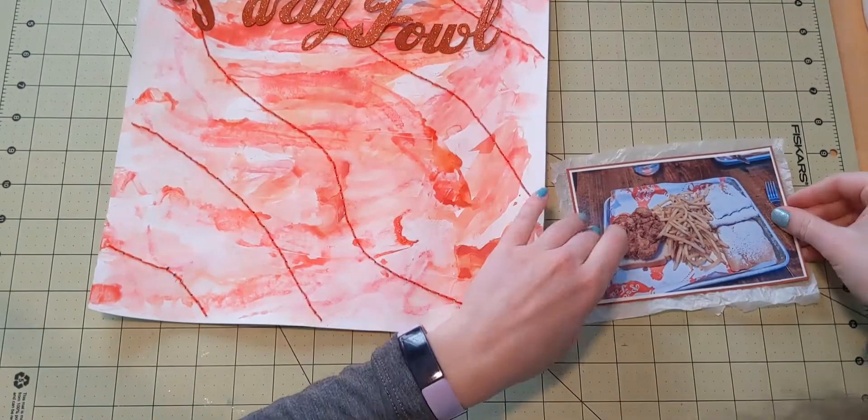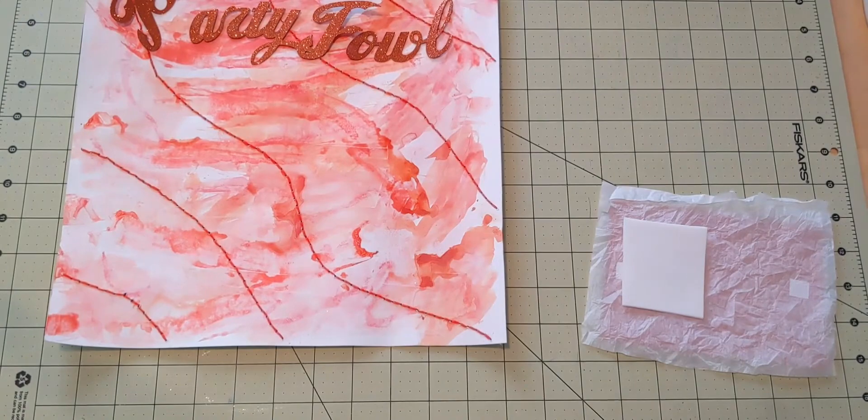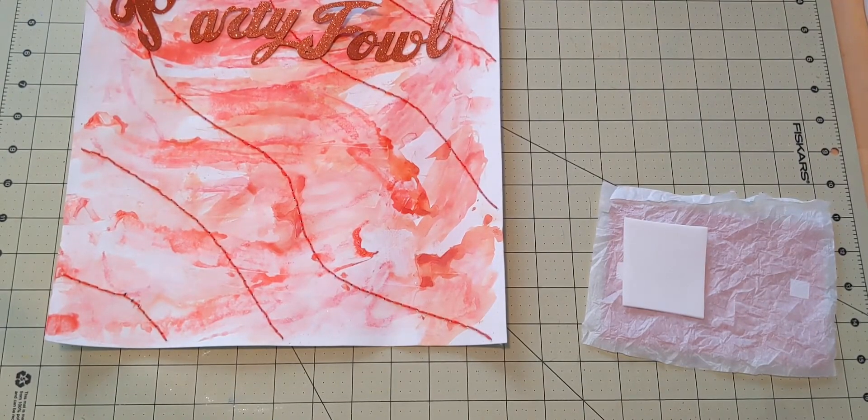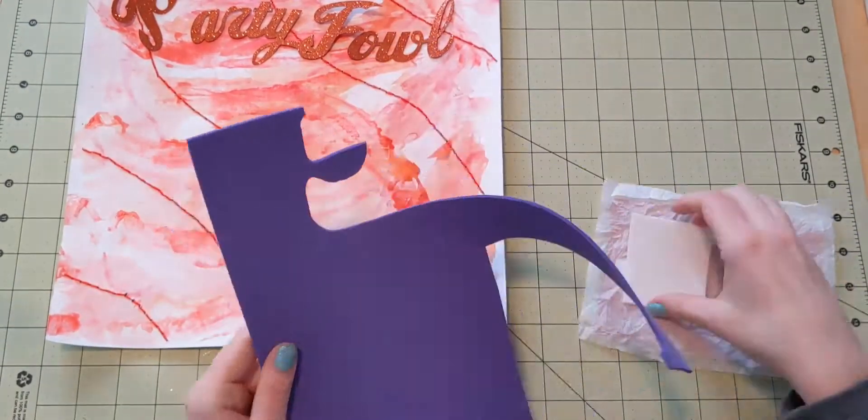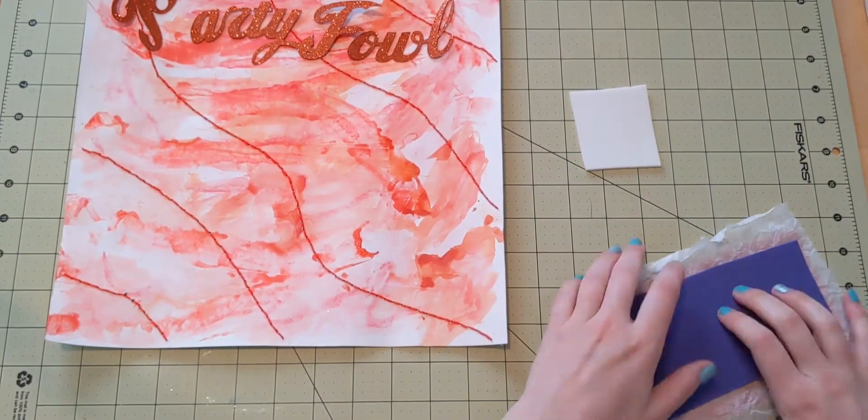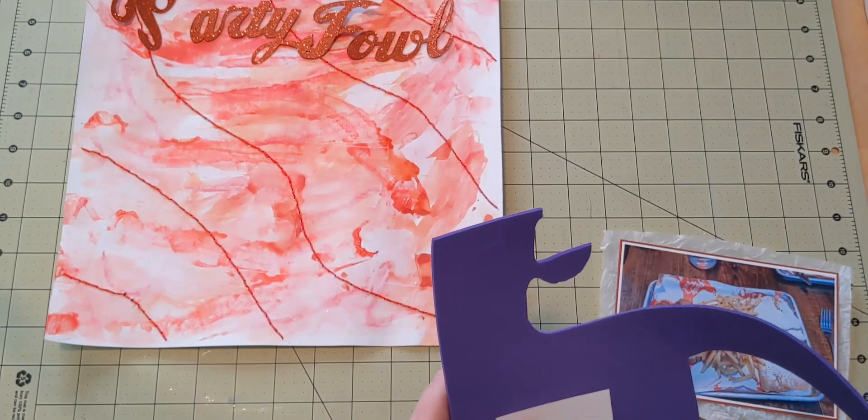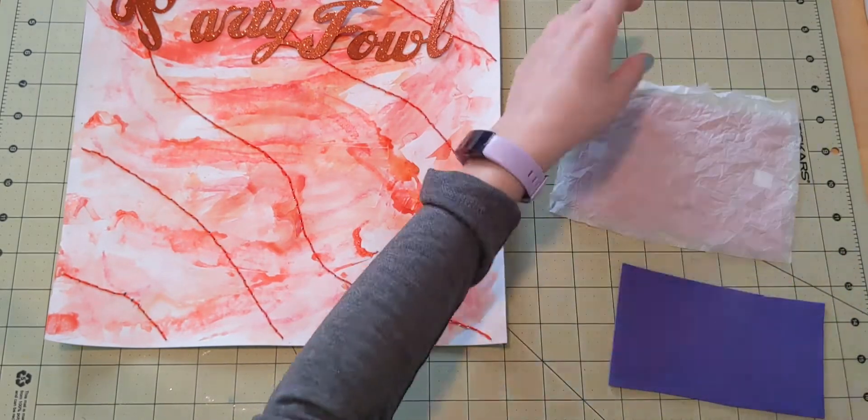Now I am putting everything together. So I decide to use a little bit of tissue paper behind my photo just to add more texture, but also to kind of draw your eye to the photo. There is a lot going on in this layout, so I don't want my photo to get lost there. I'm also popping it up on foam for the same reason.